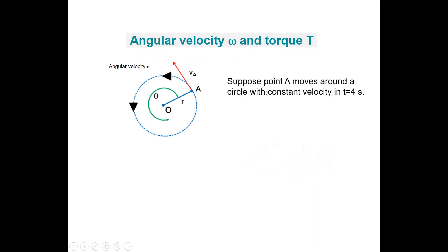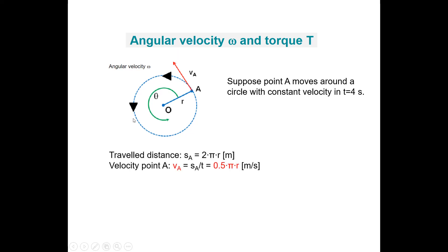Let's start with a point A that moves around a circle, and it travels with a constant velocity in 4 seconds. The travel distance is the circumference of this circle, which equals 2 times π times r meters. So the velocity at point A is equal to the distance, 2πr, divided by the travel time of 4 seconds, which equals 0.5 times π times r meters per second.